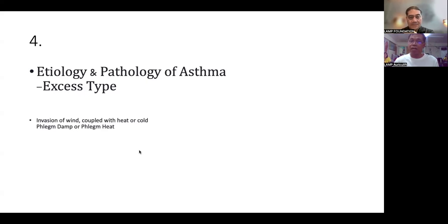That's one type of asthma, and then we have also lung attack by wind heat, or accumulation and gelling of turbid phlegm causing stagnation of the liver chi, which in turn can cause blockage of lung chi. So, invasion of wind coupled with wind heat or wind cold, phlegm dampness, and phlegm heat. Okay.